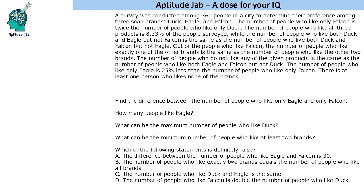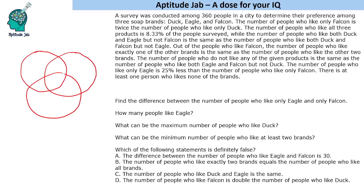Some information is given to us, and based on it we need to find out how many people liked which combination of soaps. Since it's a three-set Venn diagram, let us make the diagram. This is D, this is E, this is F.